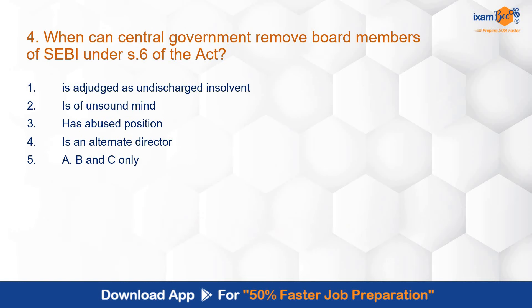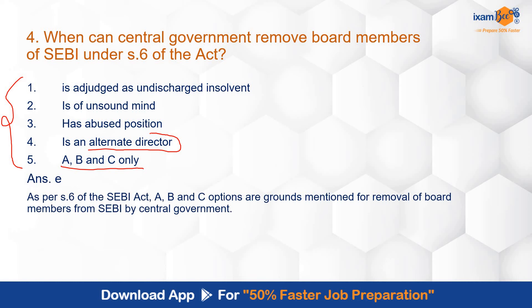Question 4: When can the central government remove board members of SEBI under section 6 of the Act? In all of the listed circumstances, a board member can be removed. The correct answer is E — A, B, and C. However, if he is an alternate director, the board member cannot be removed. This is as per section 6 of the SEBI Act, where grounds of removal of board members are mentioned.